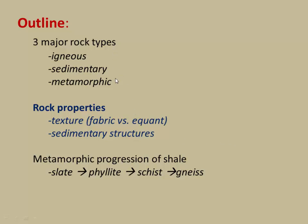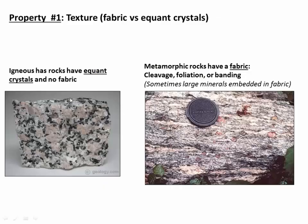Now you've got a sense of the three major rock types. I want to highlight two properties in particular: texture and sedimentary structure. Texture is essentially the difference between an igneous rock that might have equant intergrown crystals and a metamorphic rock that has a fabric. That fabric can take the form of cleavage, foliation, or banding. If you see a fabric of elongated minerals oriented in the same direction or appearing layered, that's usually a telltale sign of a metamorphic rock, because those minerals have recrystallized under pressure and grown into elongate shapes.